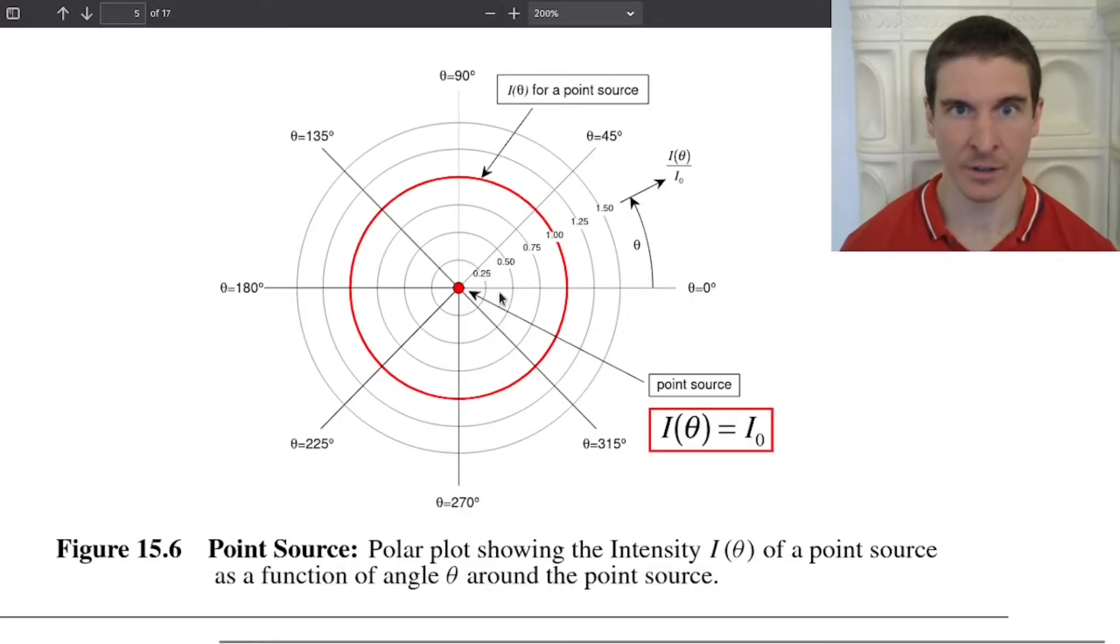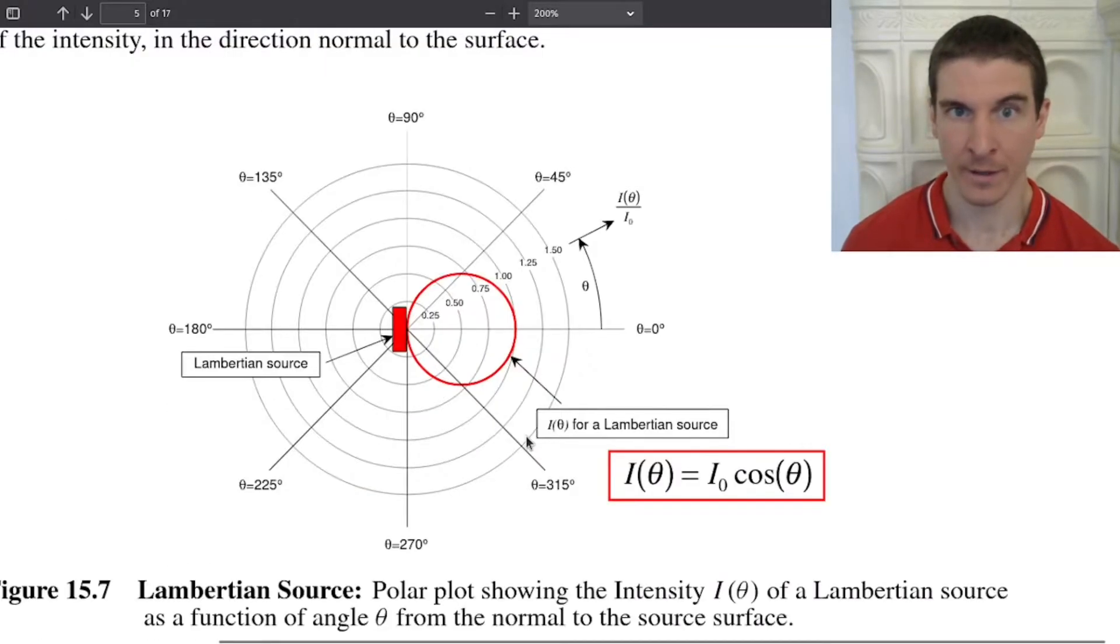A halogen or HID light source can be modeled quite precisely as an ideal point source. Light leaves an ideal point source uniformly in all directions of space. This is in two dimensions, but imagine a three-dimensional uniform sphere of light around the light source.